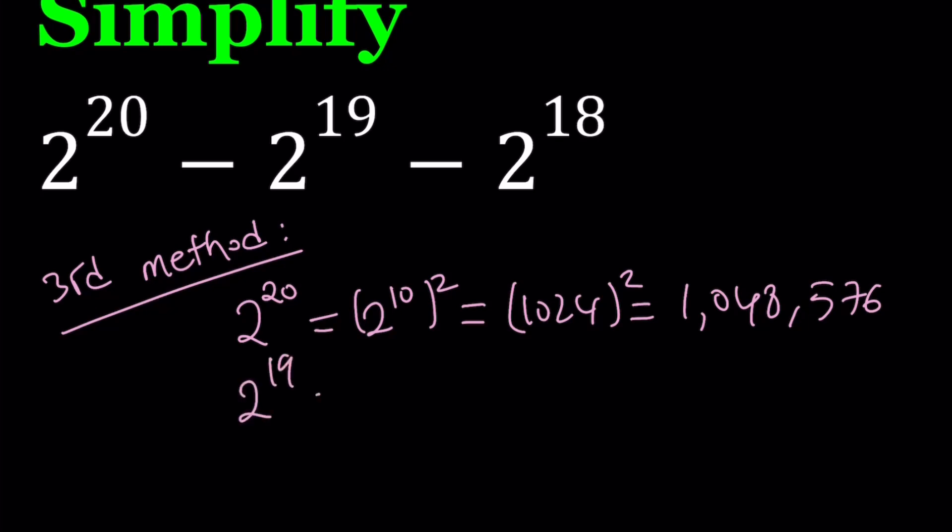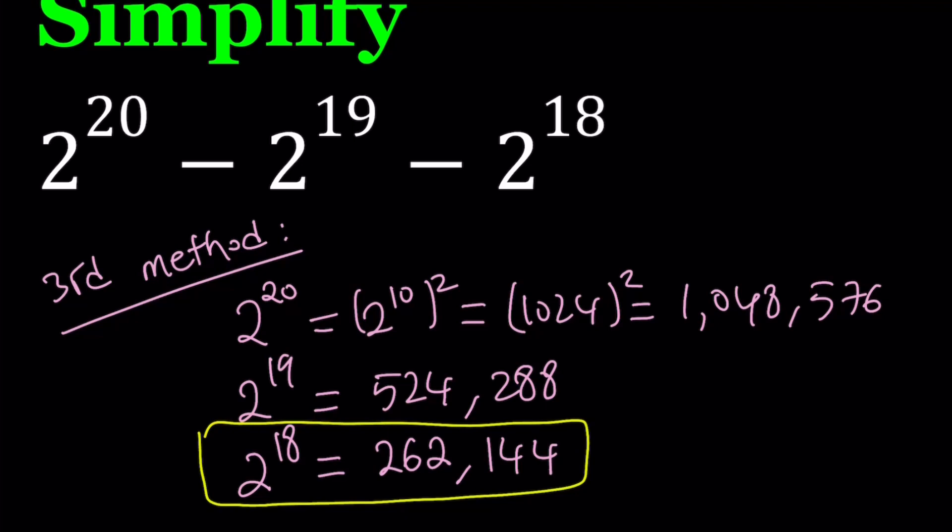And then 2 to the power 19 is just that divided by 2, and that's going to be 524,288. And the third one, 2 to the power 18, is half of 2 to the power 19, which is 262,144. I want you to pay attention to this number because this is a special number.